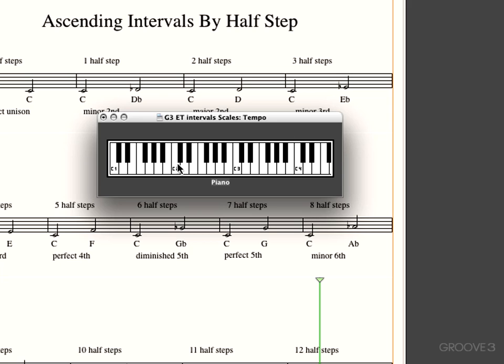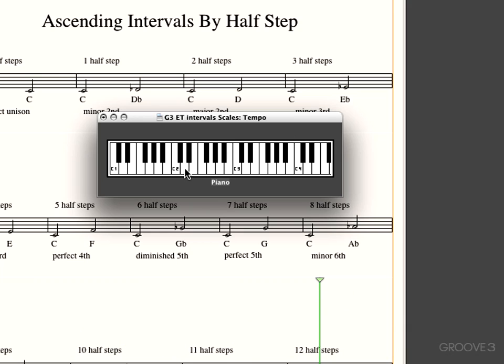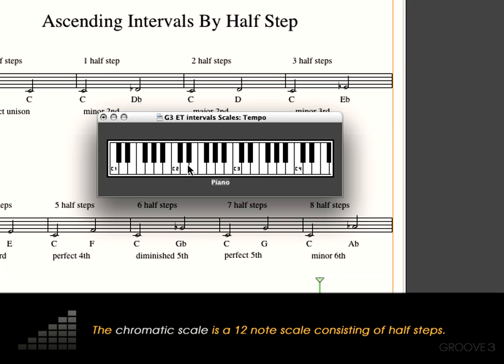So each one of these little steps is actually called a half-step. And you can see actually, there's a half-step between this note, which is E, and F, but between D and E it's a whole step because we have a black key here, which is the half-step. So the chromatic scale is all the notes, which are 12 to an octave, 12 half-steps per octave.